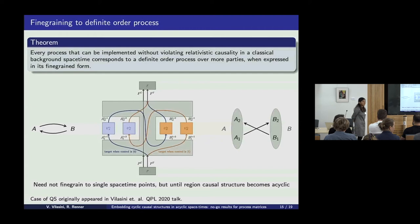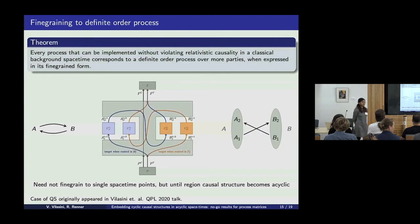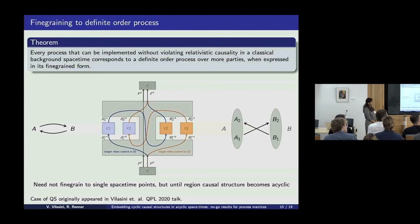Thanks a lot, Velasani. So this theorem is general, right? Whether you can embed the cyclic structure does not have anything to do with classical or quantum? Yes, that's right. I also want to ask a follow-up: you said, for example, that a classical mixture of two different orders would be considered indefinite. Can you somehow disentangle the quantum and classical parts of the indefinite causal structure?